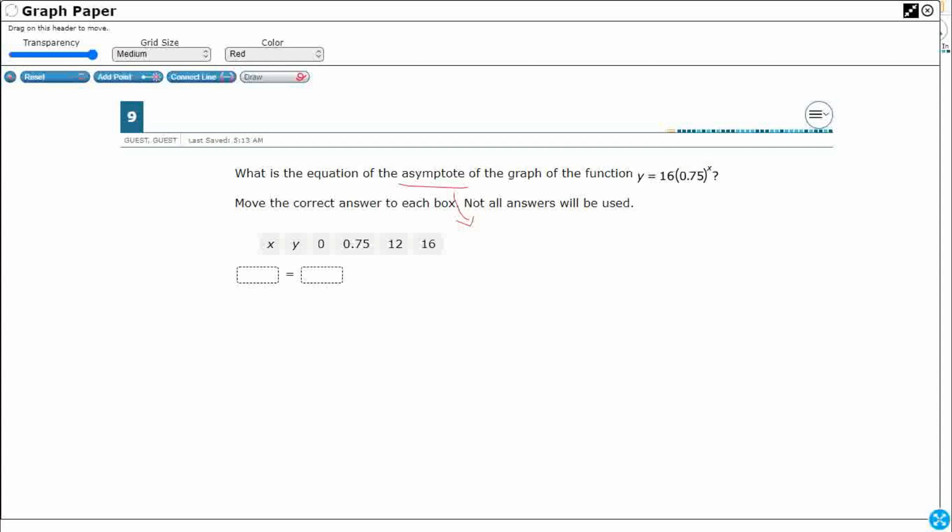Alright, so what is the asymptote? The asymptote is a straight line on a graph, usually it's an imaginary straight line, that a curve approaches infinitely.